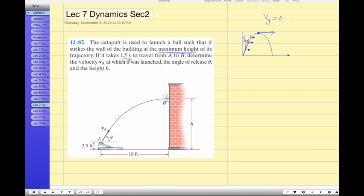And it takes about 1.5 seconds to travel from A location to B location, and B location is located at the maximum height. Then it hits the wall at location B. You have to find out this velocity Va, and you have to also find out the angle of release or the initial projectile angle, and you have to also find out the height from this level.